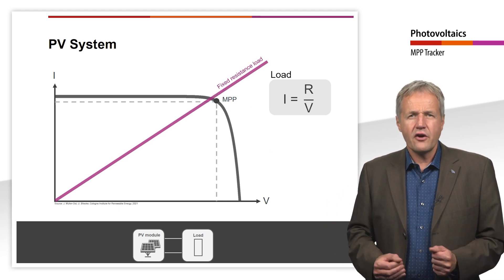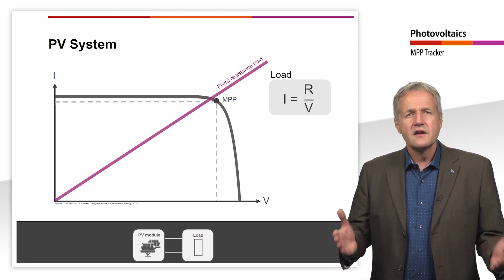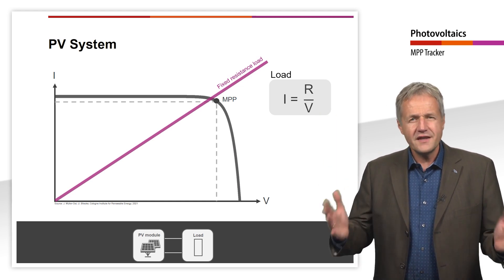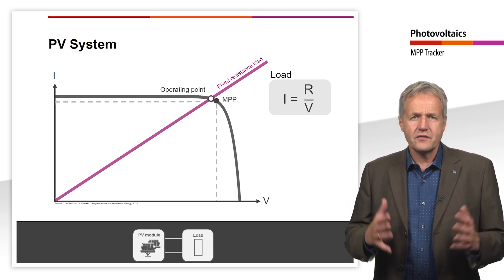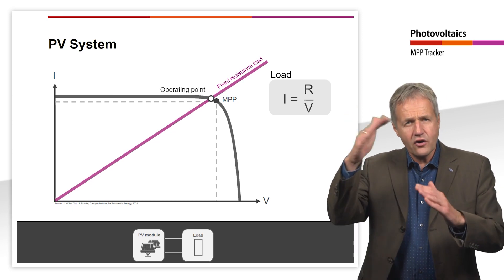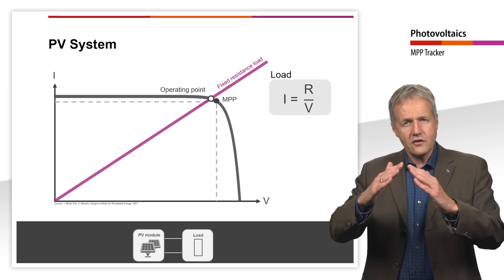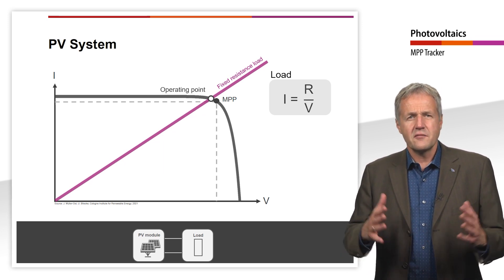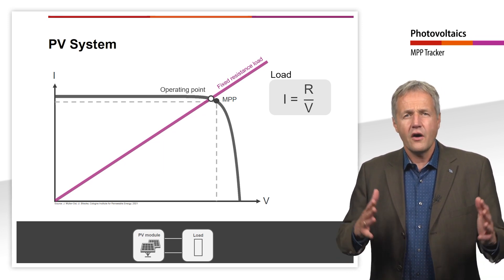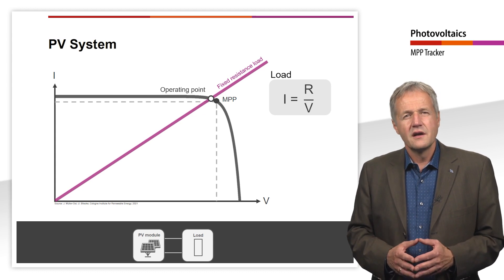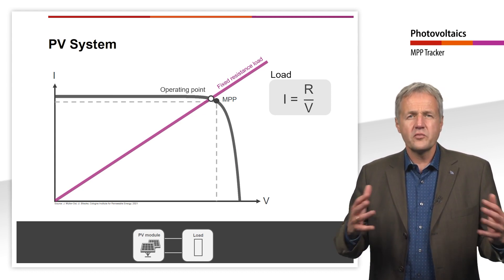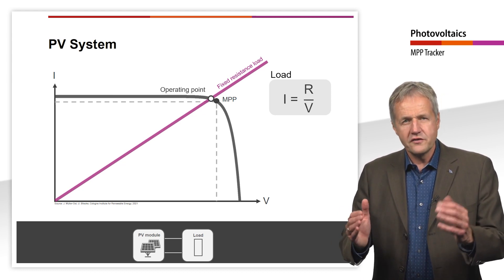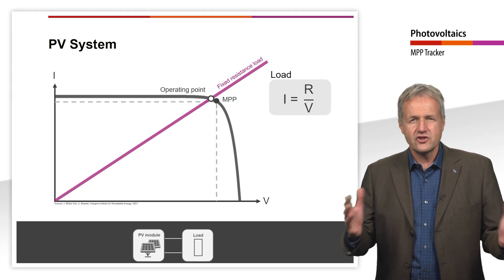For the IV curve of the resistor, this linear relationship means that it is a straight line. We see that the IV curve of the resistor intersects the curve of the module at a certain voltage. It is this intersection that marks the operating point of the PV module. Ideally, this operating point would correspond exactly to the MPP of the module or would be close to it, like in the case shown here.